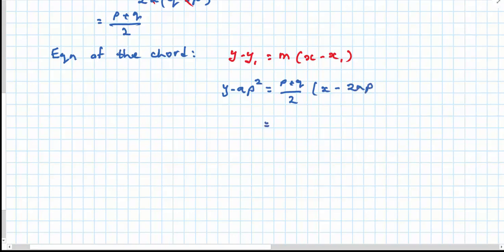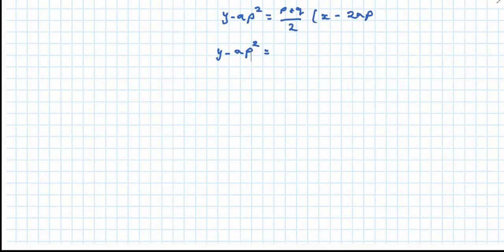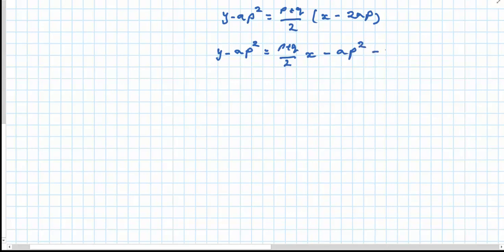I'm going to expand the right hand side, so leave the left hand side as is. That will leave me with p plus q over 2 times x. The two's will cancel and I'm going to expand the brackets straight away. So that would be minus ap squared minus apq.